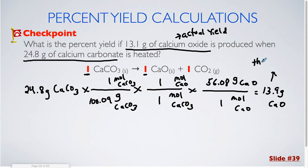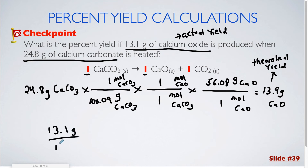So 13.9 grams is my theoretical yield — based on the stoichiometry, this is how much you would expect to make. We're going to take our actual yield of 13.1 grams, divide that by our theoretical yield of 13.9, and multiply by 100. That gives us 94.2%, which is our percent yield.